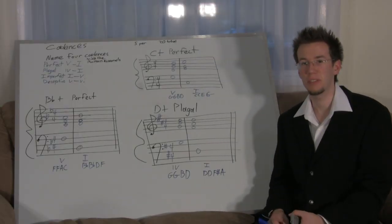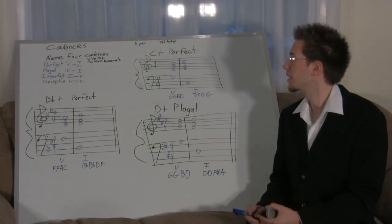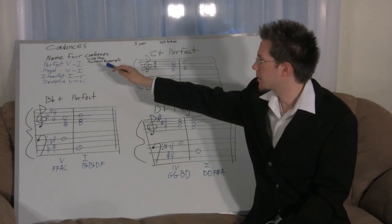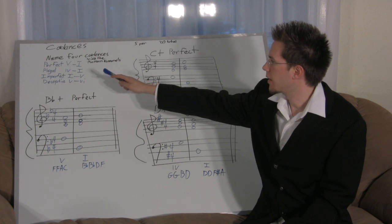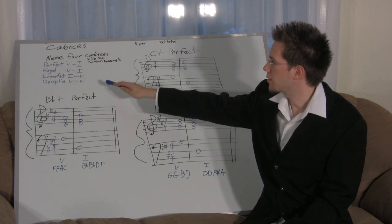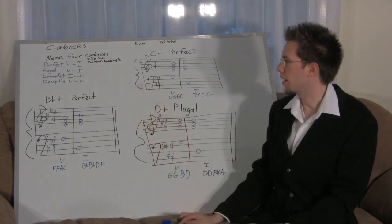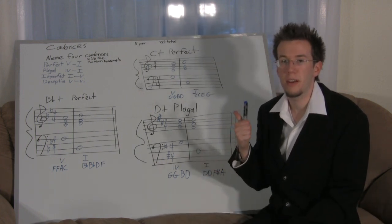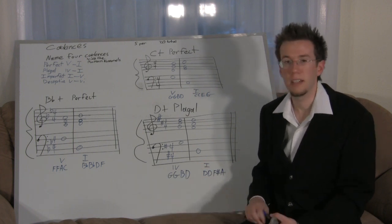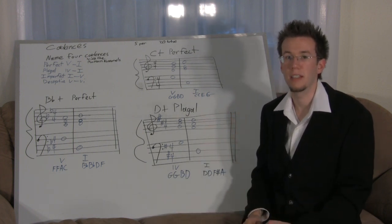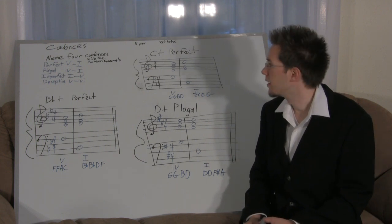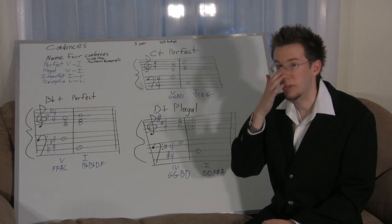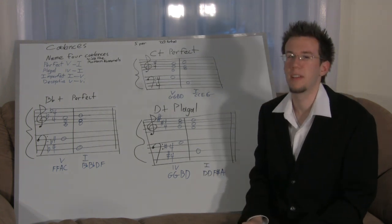Here are the answers for cadences. The four cadences with Roman numerals are: perfect is five-one, plagal is four-one, imperfect is one-five, and deceptive is five-to-six. If you got all four right: five out of five. If you got one wrong, that's three out of five.